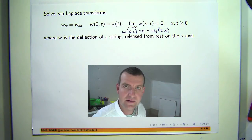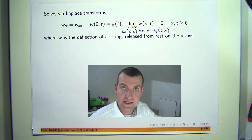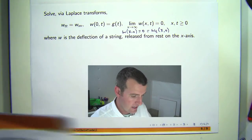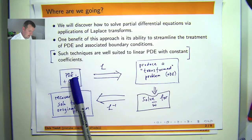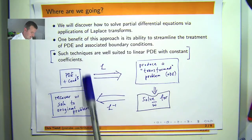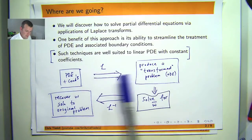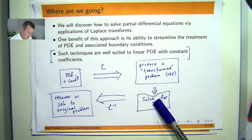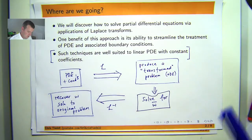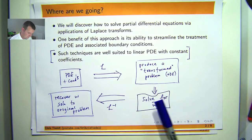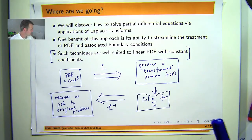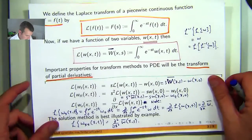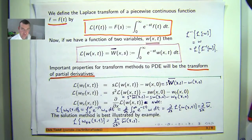In other videos I have discussed how to solve ODEs and associated initial value problems by Laplace transforms, but let me just run through the method. You start with a PDE and some associated conditions, transform the PDE and produce a transform problem which is essentially an ODE.